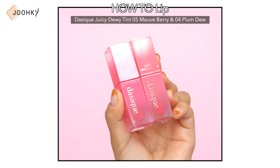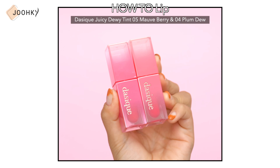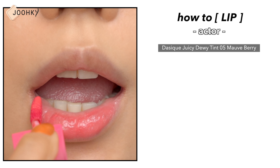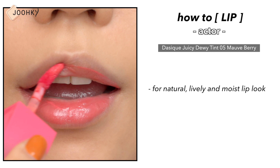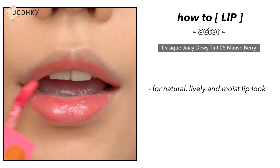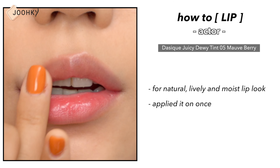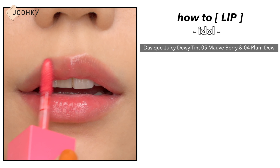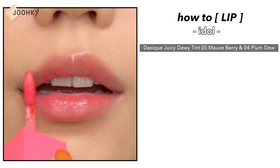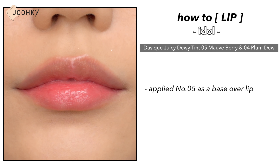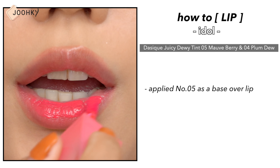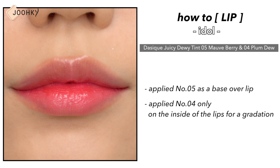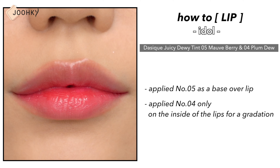Lastly, for the lips, I used Daisic's Juicy Dewy Tint. I used No. 5 Moff Berry for the actor look — since I'm going for a natural, lively and moist lip look, I'll apply it on once. I used two colors for idol makeup: No. 4 Plum Dew and No. 5 Moff Berry. Since a thick and saturated feel goes well with colorful makeup, I applied No. 5 as a base over the lip, then applied No. 4 only on the inside of the lips for a gradation effect.